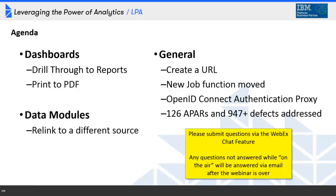Finally, there were 126 APARs and over 947 defects addressed in Release 10. Like Releases 8 and 9, IBM has been focusing a lot over the last six months on product stability to address the defects, small and large, that we may have encountered in earlier versions of the product.